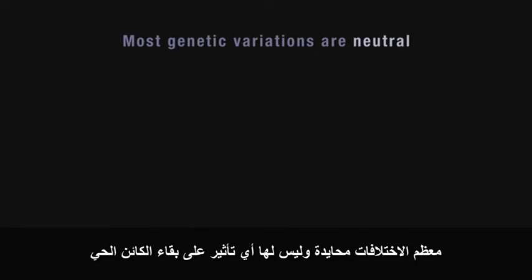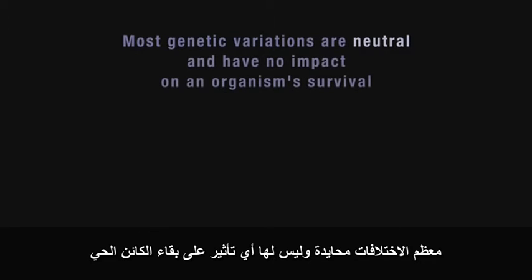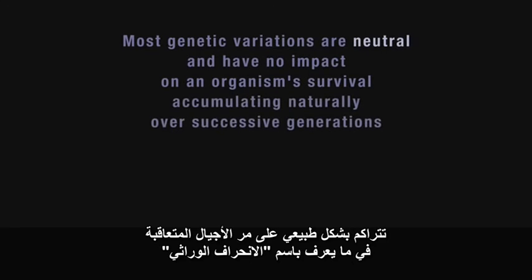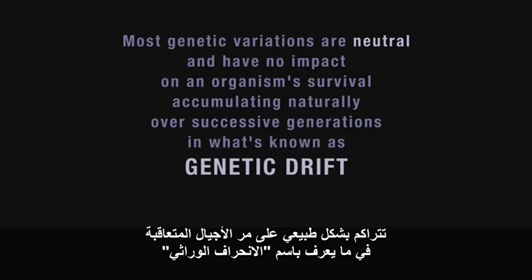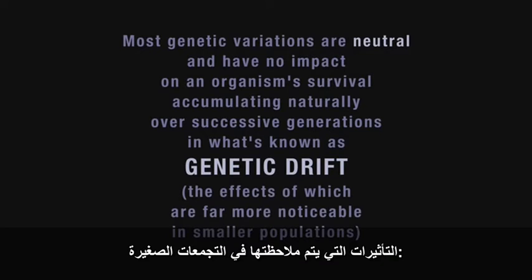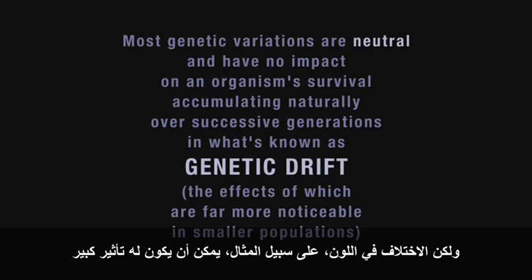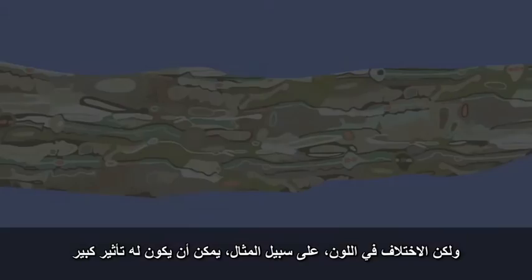Most variations are neutral and have no impact on an organism's survival, accumulating naturally over successive generations in what's known as genetic drift, the effects of which are far more noticeable in smaller populations. But a variation in colour, for example, could have a major impact.